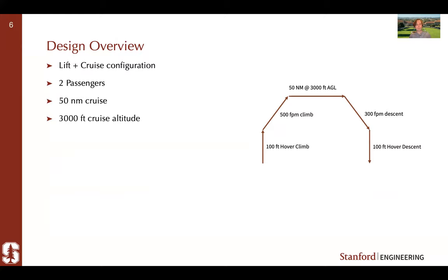For today we're going to do a simple flight profile for that vehicle. It's a lift-plus-cruise configuration. At the start we're going to hover for about a hundred feet, then climb out on the wing, cruise for 15 nautical miles, descend, and then hover again to land. It's going to be a two-passenger vehicle with a short 15-nautical-mile cruise. The point was just to put together a quick mission that's fairly simple but can show what SUAVE can do.